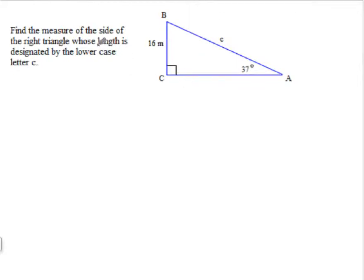Again, we have to find the measure of the side of the right triangle whose length is designated by the lowercase C. So, here we've got our reference angle, 37 degrees. And we've got 16 is opposite and the hypotenuse is C. So, opposite over hypotenuse, that is going to be the sine. So, sine is opposite over hypotenuse.